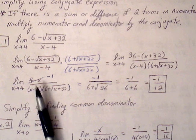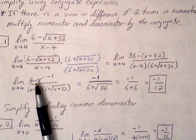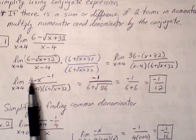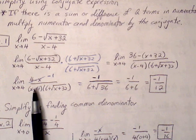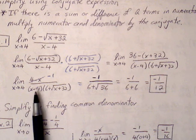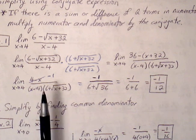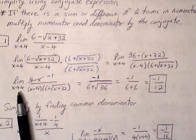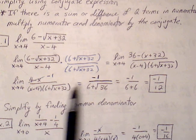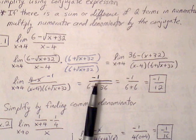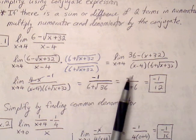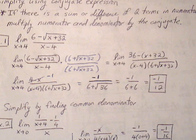Now 4 minus x can cancel with x minus 4. We factor out a negative 1, which allows the two factors to cancel. Once we cancel out (x minus 4) in the denominator, we re-plug in the argument. Plugging 4 in for x gives 6 plus root 36. The numerator is just negative 1, so we get negative 1 over 6 plus 6, which reduces to negative 1 over 12.